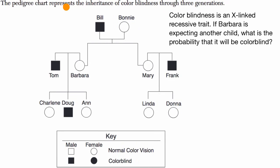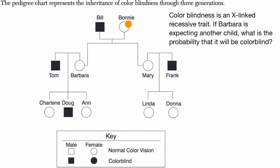We are told the pedigree chart represents the inheritance of colorblindness through three generations. The standard convention is a square is male, circle is female. If it's colored in, that means that they exhibit the trait — in this case, colorblindness. So Bill exhibits colorblindness; his phenotype is colorblind, while Bonnie does not exhibit colorblindness.